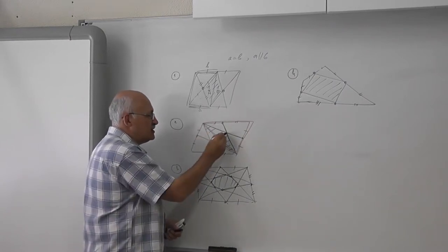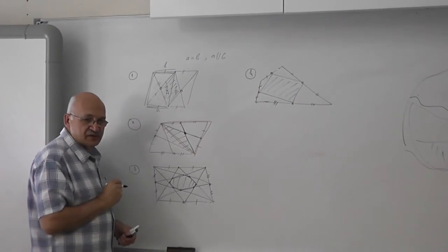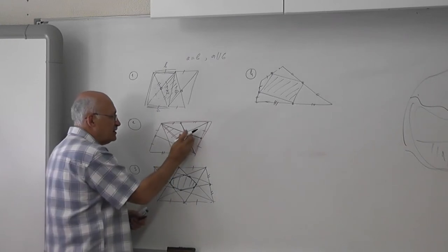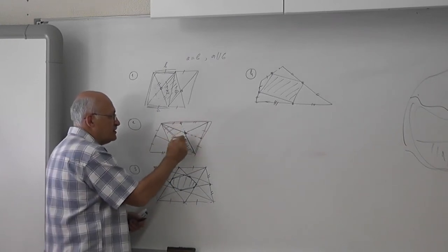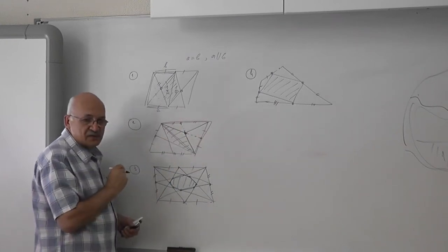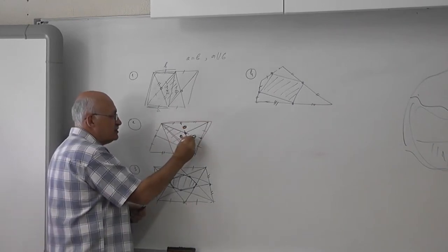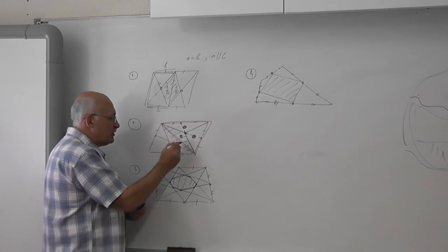This is the centroid, intersection of the medians. And we know, we have seen that these three triangles have equal areas. So this area is equal to this one and this one to this one. So this is one-third.